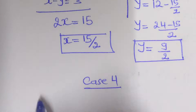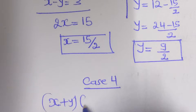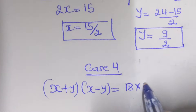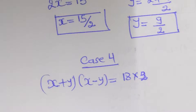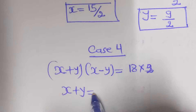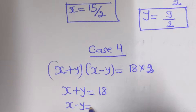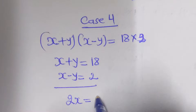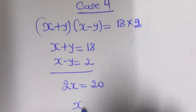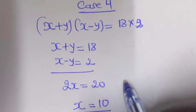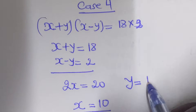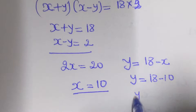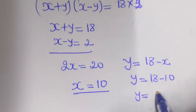For case 4: x plus y and x minus y equal to 18 times 2. So x plus y equal to 18 and x minus y equal to 2. By solving simultaneously, 2x equal to 20, so x equal to 10. Finding y: y equal to 18 minus x, so y equal to 18 minus 10, therefore y equal to 8.